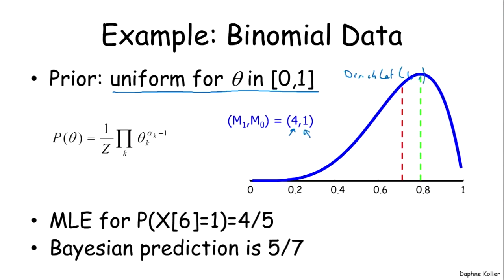For maximum likelihood estimation, we have four heads, one tail, maximum likelihood estimate is four fifths. So that's going to be the prediction for the sixth instance.